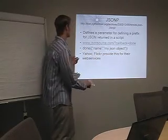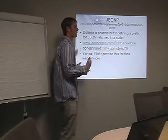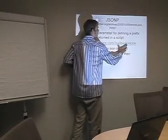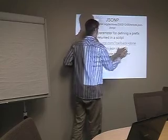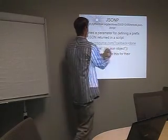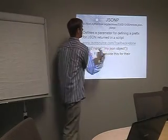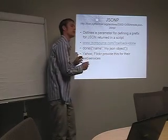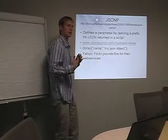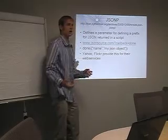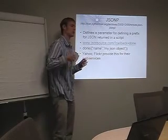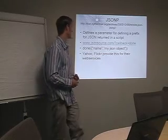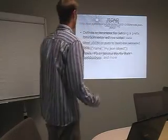What JSONP basically allows us to do is: if I'm going to call JSON-source.com and get some JSON, I say when you return that JSON, have a prefix of 'done' — a callback of 'done'. The server, rather than just returning JSON data, prefixes it with 'done' and wraps it in parentheses to make it valid JavaScript. That way I can have a 'done' method to handle this callback, and I can load this script and be notified when it's loaded. Yahoo and Flickr are examples of web services that actually allow this.